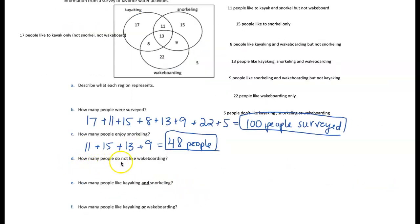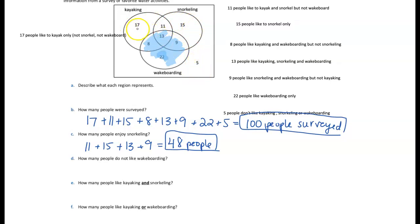Part D: How many people do not like wakeboarding? If they do not like wakeboarding, we cover up the wakeboarding set and include all numbers that are not covered. Those numbers are 17, 11, 15, and 5, which adds up to 48 people.